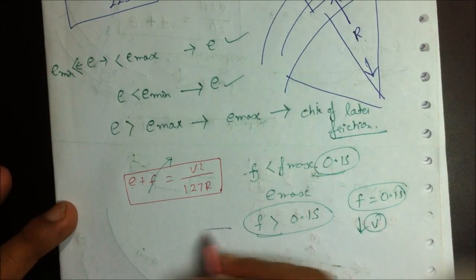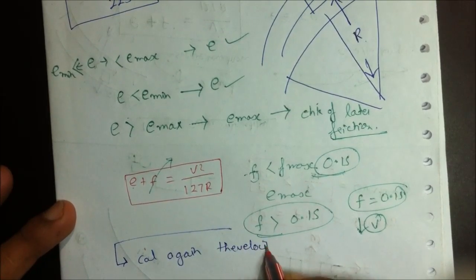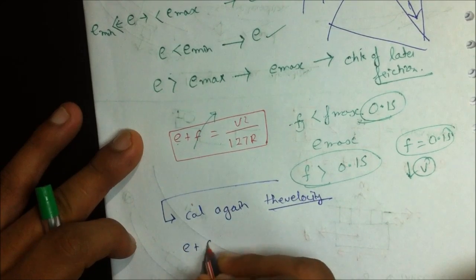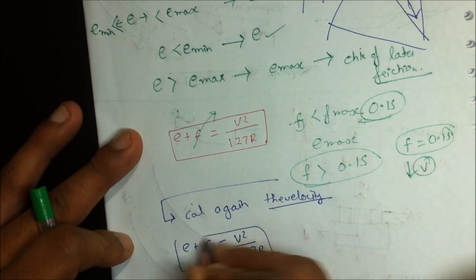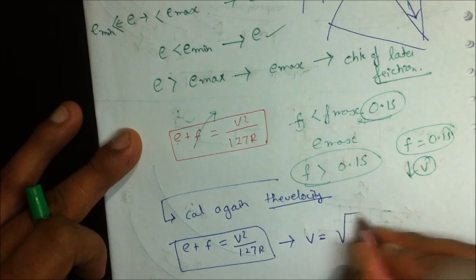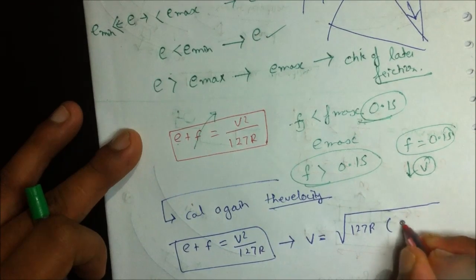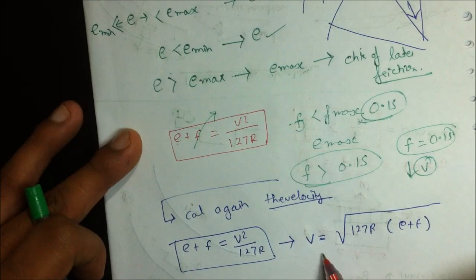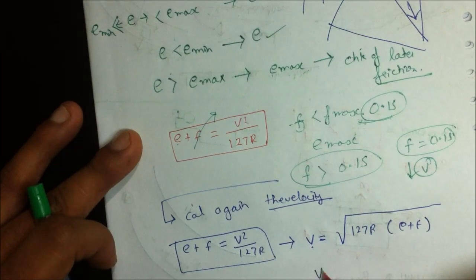We again use E plus F equals V squared upon 127R, and from here we calculate the actual velocity that should be allowed on the curve — that is, V_allowable.